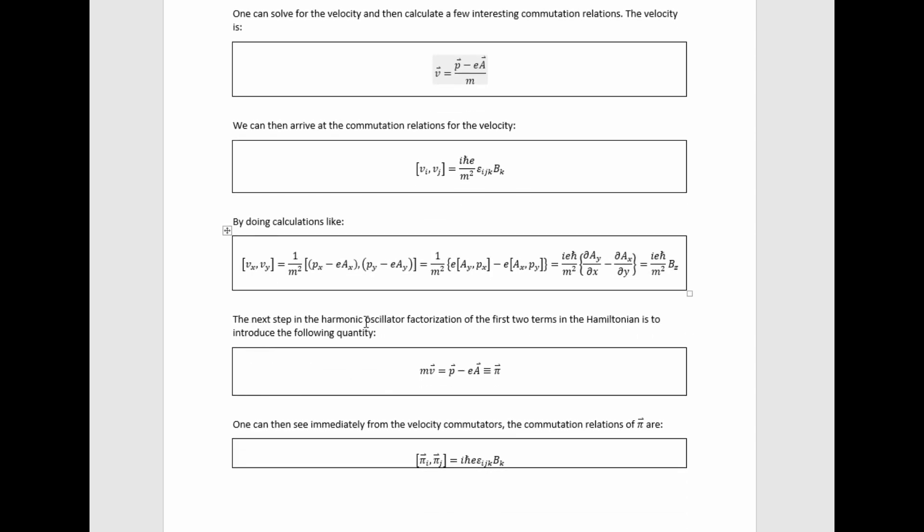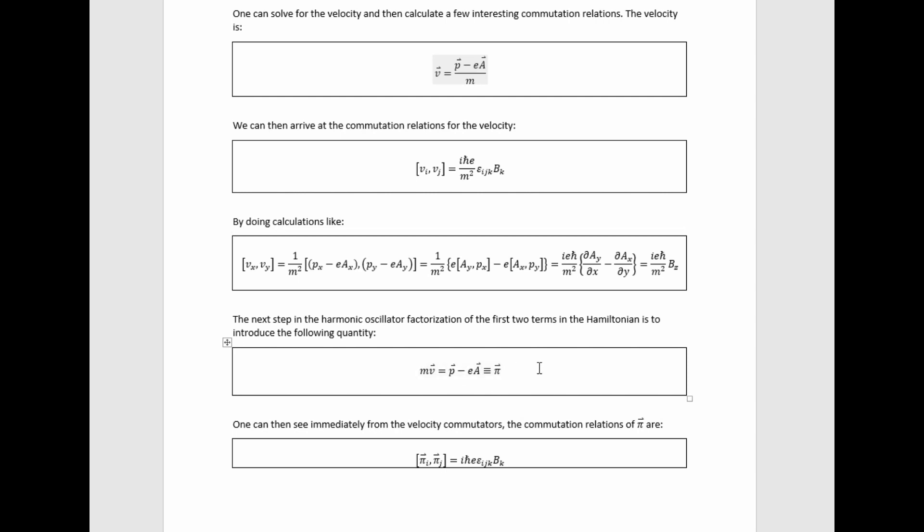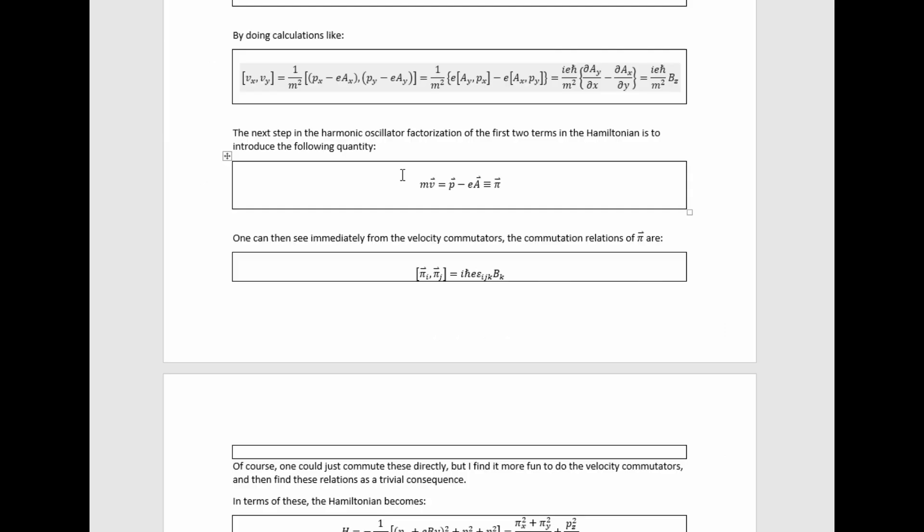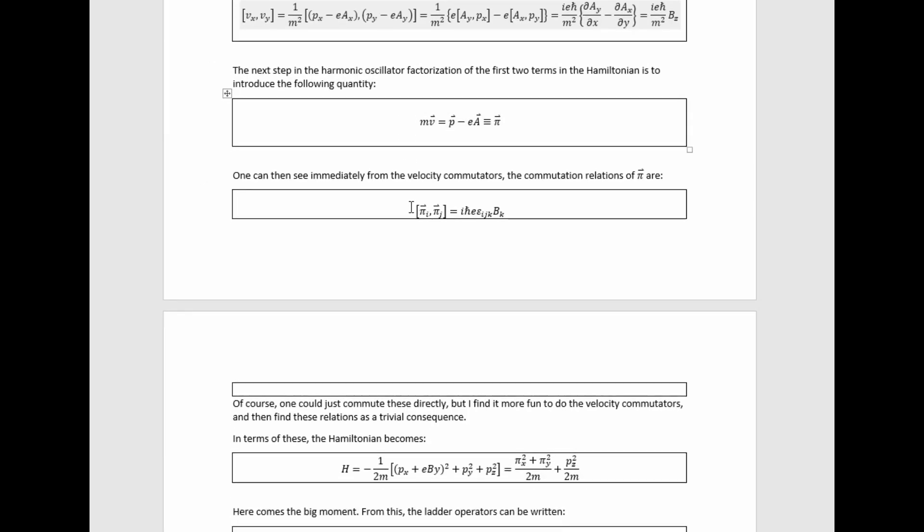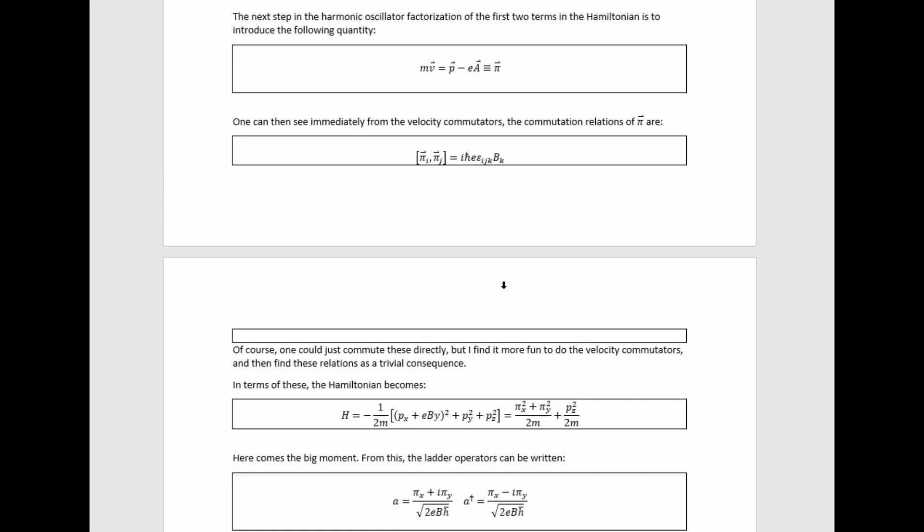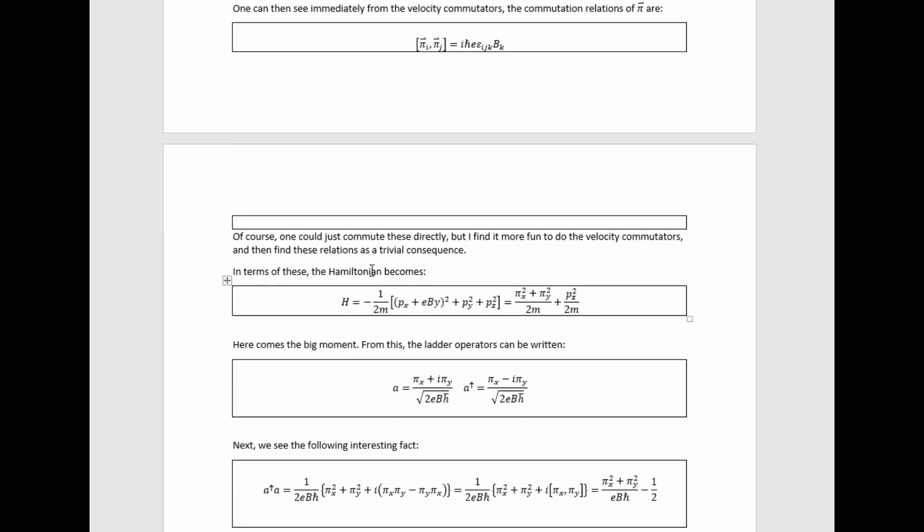The next step in the harmonic oscillator factorization of the first two terms in the Hamiltonian is to introduce this quantity here, which is new. We can see from this result up here and this definition that the commutator of these pies simply equals this. Of course, one could just commute them directly, but I find it more fun to do the velocity commutators and then find these relations as trivial consequences. I didn't really have a particularly good reason. I just like doing it that way.